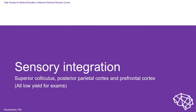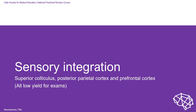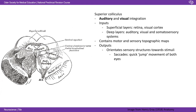Sensory integration — lower yield for exams, so we're going to whizz through it. You need much more detail if you're writing essays, but for the part A MCQs we can cover this fairly promptly. The three things you need to know about are the superior colliculus, the posterior parietal cortex, and the prefrontal cortex. The superior colliculus is at the back of the brainstem, behind the cerebral aqueduct. It's where you get auditory and visual integration — that's the key thing to take away.